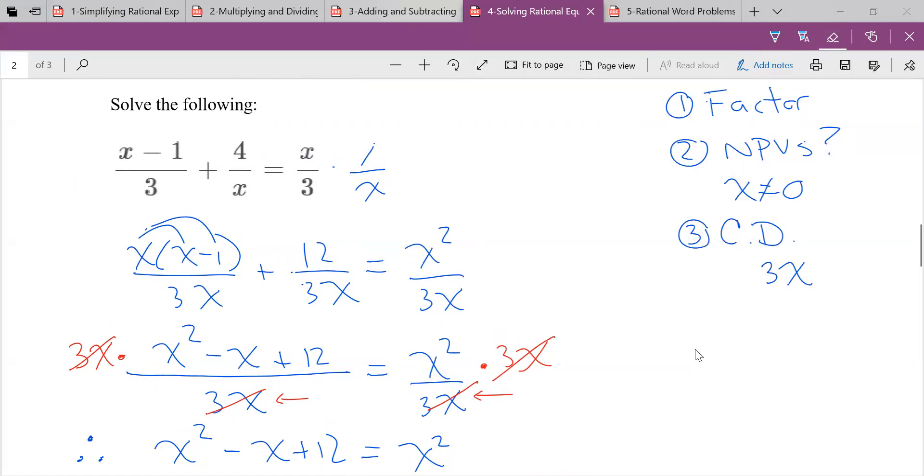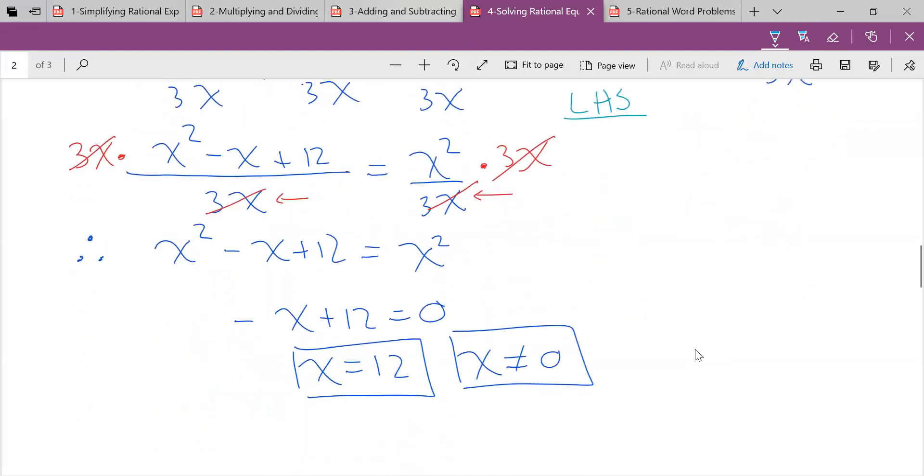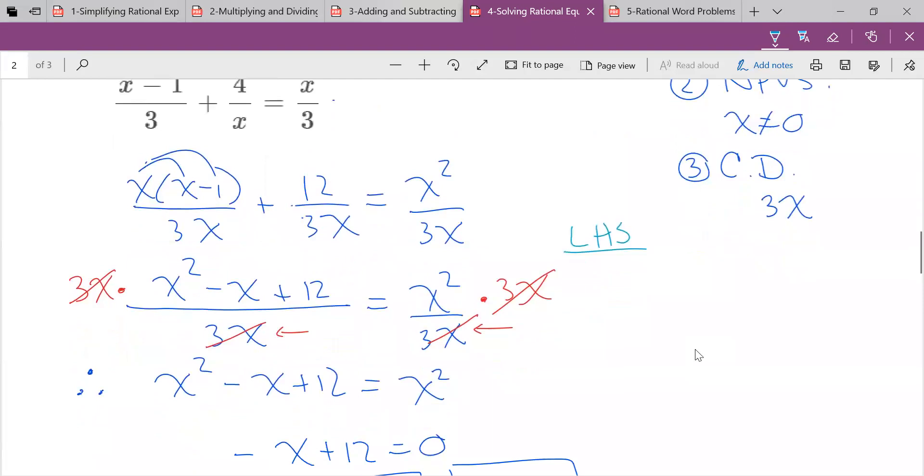So again, to verify, I check the left-hand side and right-hand side separately. So I said, what did I say a second ago? The answer is 12. I don't have enough coffee in me. So I sub in the 12 into the left-hand side like that.